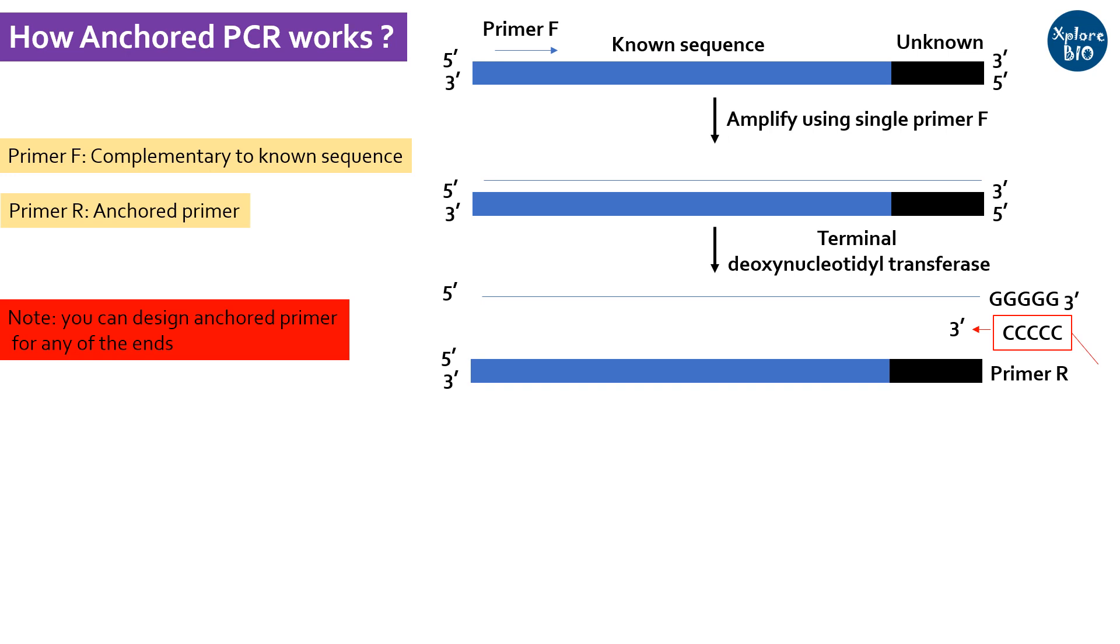The anchored primer can have any sequence at its 5' end, but it must have multiple C's at its 3' end to pair with the oligo-G region we just created.